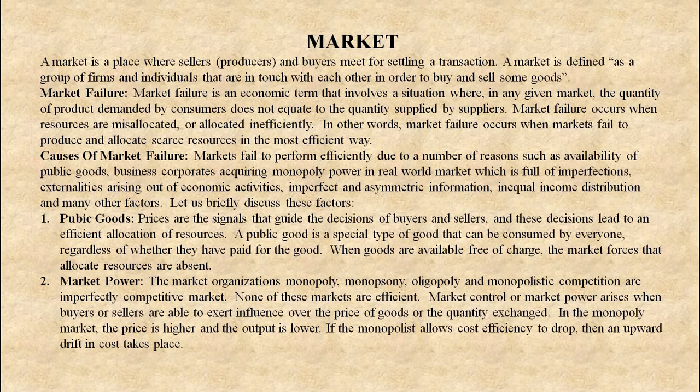Number 1: Public goods. Prices are the signals that guide the decisions of buyers and sellers, and these decisions lead to an efficient allocation of resources. A public good is a special type of good that can be consumed by everyone regardless of whether they have paid for it or not. When goods are available free of charge, the market forces that allocate resources are absent.